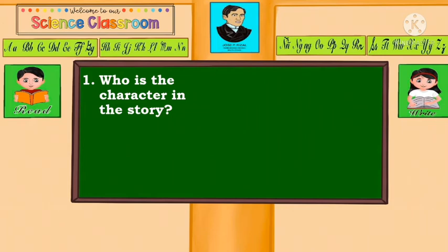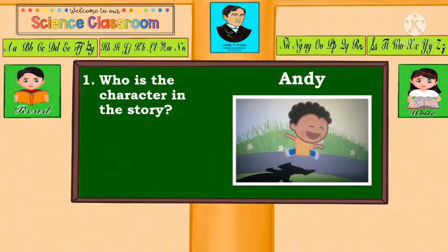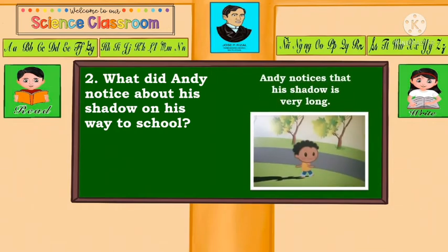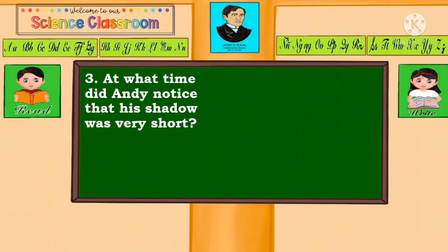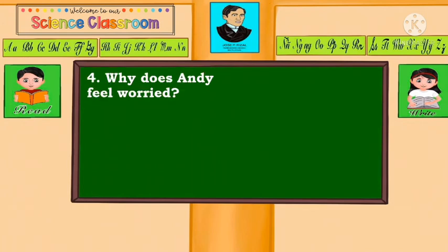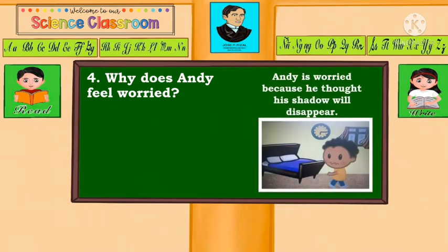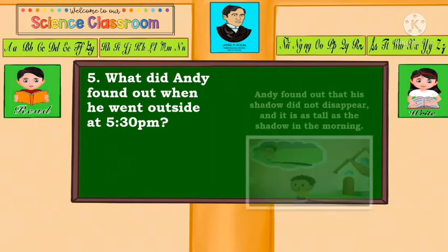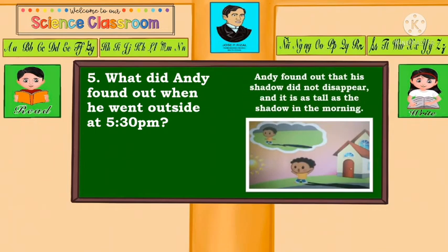Who is the character in the story? It is Andy. What did Andy notice about his shadow on his way to school? Andy notices that his shadow is very long. At what time did Andy notice that his shadow was very short? At 12 noon. Why does Andy feel worried? Andy is worried because he thought his shadow will disappear. What did Andy find out when he went outside at 5:30 pm? Andy found out that his shadow did not disappear, and it is as tall as the shadow in the morning.